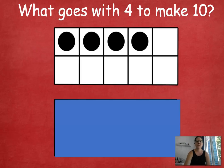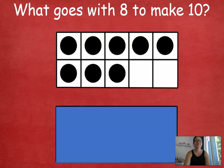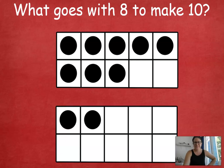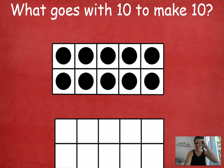Let's try this one. 4 and 10. How many more do we need to get from 4 to get to 10? 6. Beautiful job. How many more to get from 8 to 10? 2. Good job. What goes with 10 to make 10? Do we need any more? 0. Excellent.